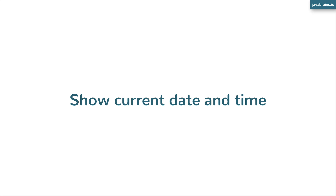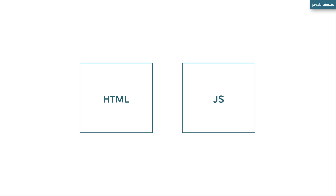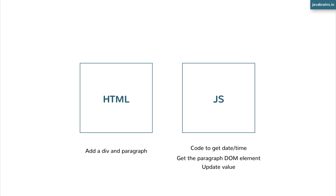Let's take an example. Let's say I want to have an app which shows the current date and time — just whatever is the time when the page loads. How would you typically approach this in a traditional paradigm? You have your HTML and your JavaScript file. In your HTML, you add a div or a paragraph where the time needs to be displayed. Then on the JavaScript side, you write code to get the date and time, get the paragraph DOM element, and update the value based on whatever date and time you've got.